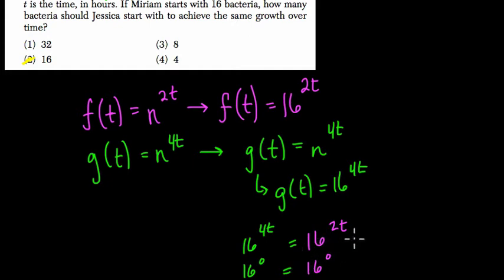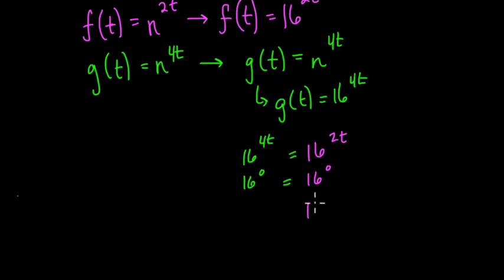If t is 1, imagine t is 1 for a second. Instead of 16^0, you would get 16 squared, and then over here, you would get 16 to the 4th. So 16 to the 4th cannot equal 16 squared. So any value other than 0, these two values will never be the same.